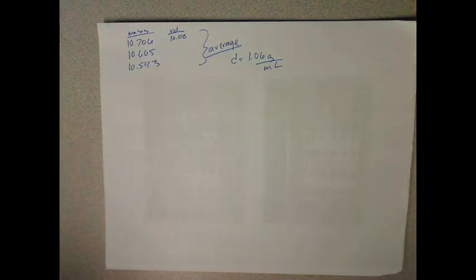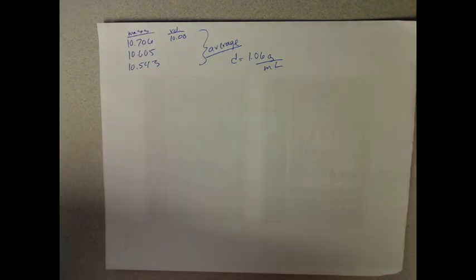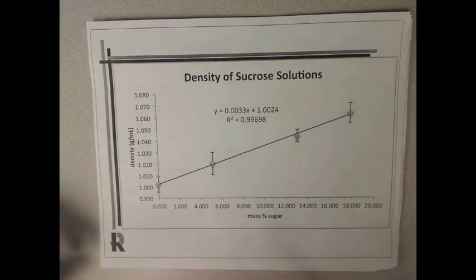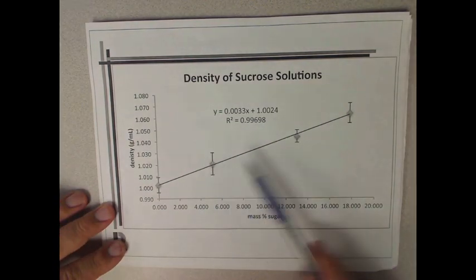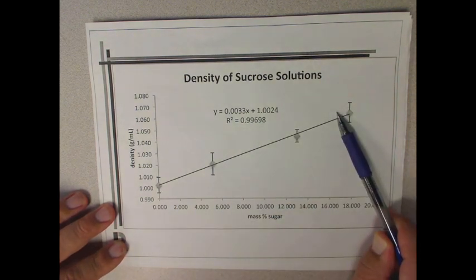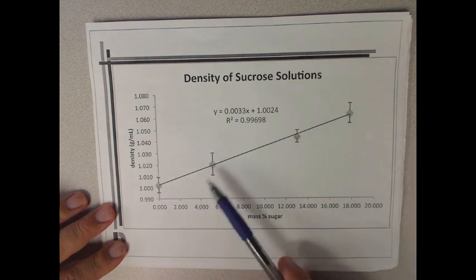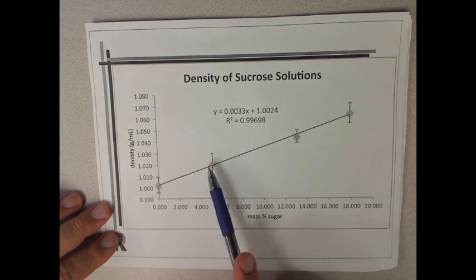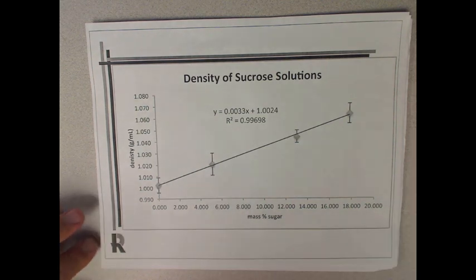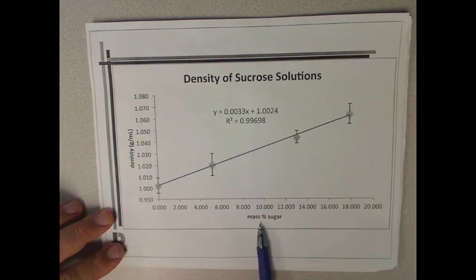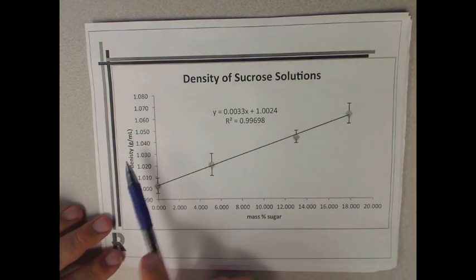If you then did this for all your different solutions, the four different or five different solutions, then you graph it out here. In chemistry we have certain standards: you use points and not connect the dots, then the fit is put on top of it. This is the trend line that's added on top. I have error bars, that's not necessarily something you're going to need to have, this is something I added just for as you get more advanced you'll start learning about these error bars.